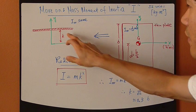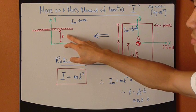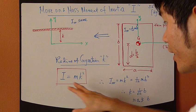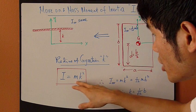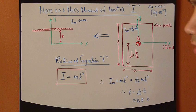So some problems, you're given K, and in that case, these things are much easier. You just use this equation to find your moment of inertia I, and that's all.